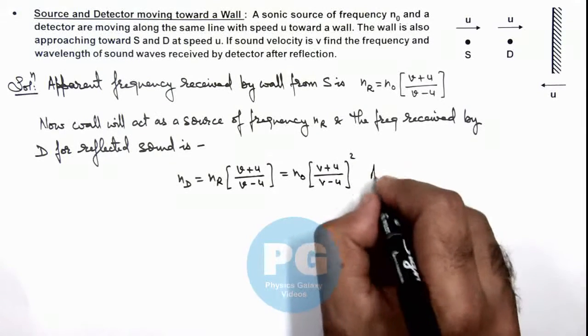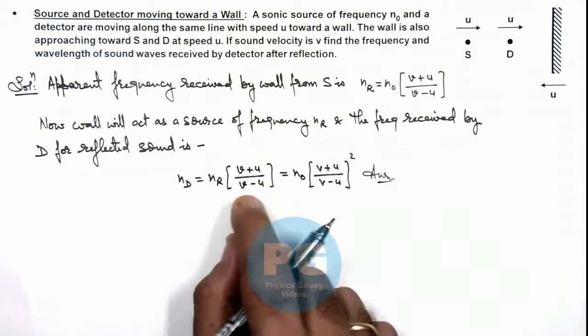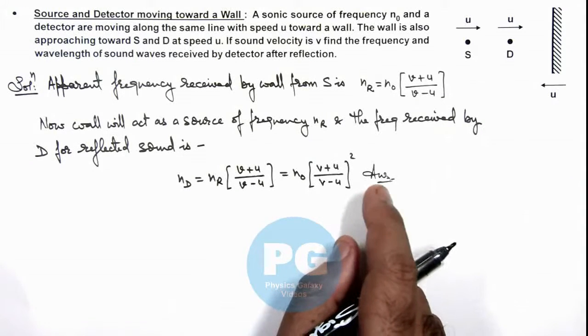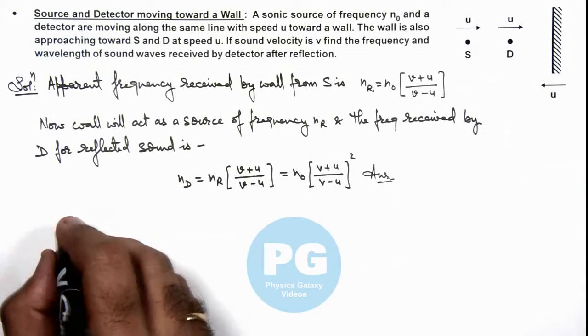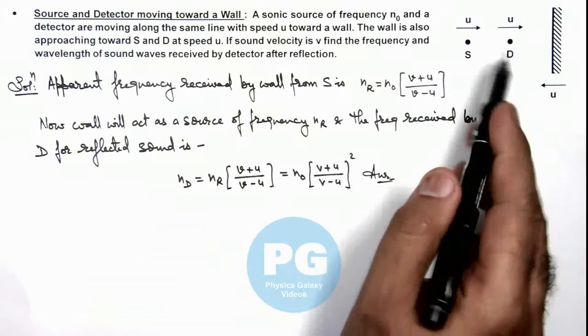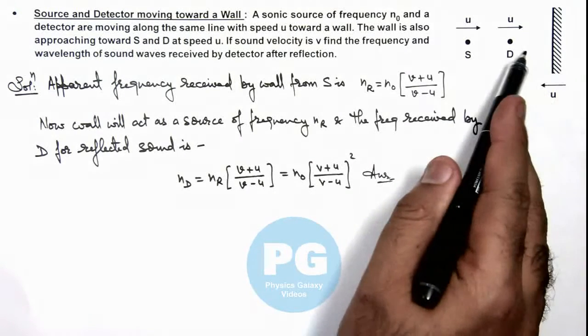That is the result of the frequency detected by the detector. If we wish to calculate the wavelength of sound which is received by detector, it is the one which is emitted from the wall.